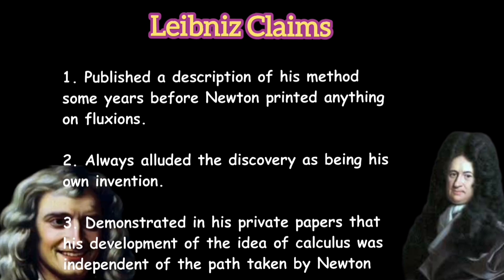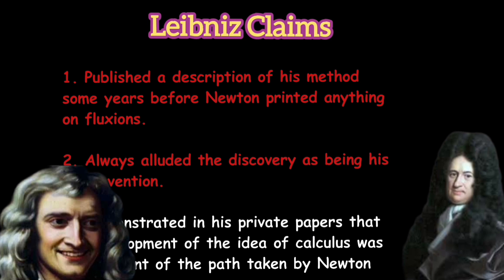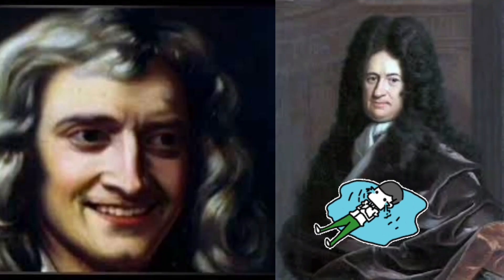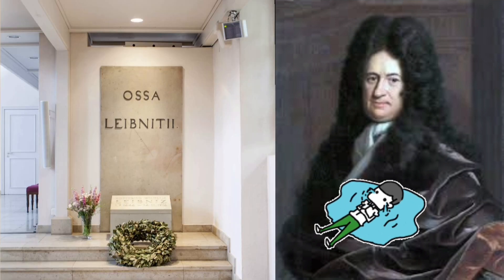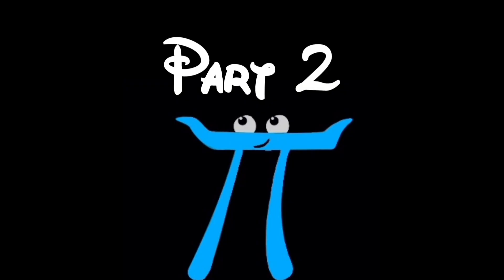Newton's supporters challenged him on the point 1 and 2 that he saw some of the papers of Newton and obtained fundamental ideas of calculus from those papers. Following years in the life of Leibniz were very miserable even after his death. His grave went unmarked for 50 years and his contributions were not appreciated which we will discuss in the next part of this video.